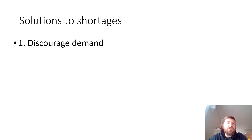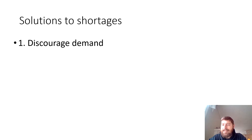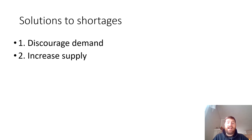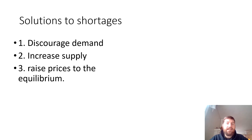Next time we will talk about three solutions to shortages. Number one, you can discourage demand — figure out how to make people question whether they really need the product and tell them to buy something else. Number two, you could increase supply, which is usually a very good long-term solution, but it may take a while — building more houses, for instance, can take years. And lastly, the best solution always: raise prices to meet the equilibrium. We'll talk about these more in depth next time.